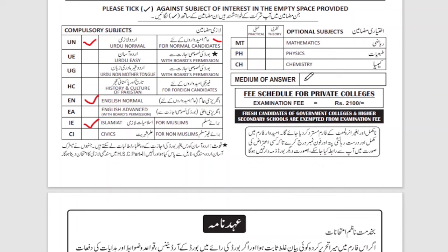Now for the optional subjects. For pre-engineering, the optional subject is Maths — Maths is not practical, so you just tick it. For Physics and Chemistry, there are two things: practical and theory. You must tick both. Give all these subjects in English and make sure you mention English as the medium.